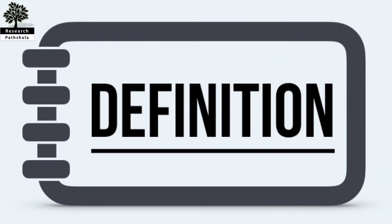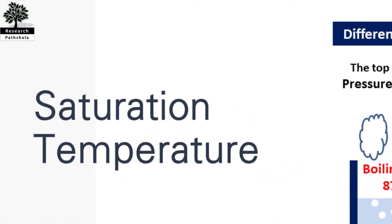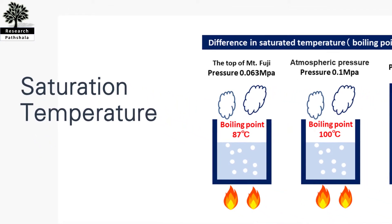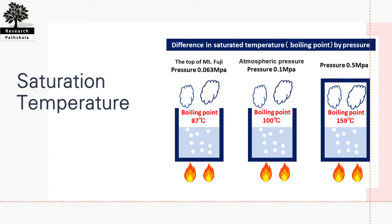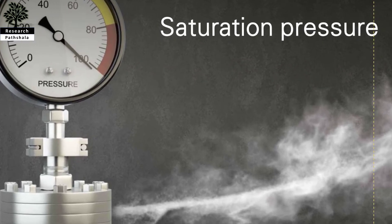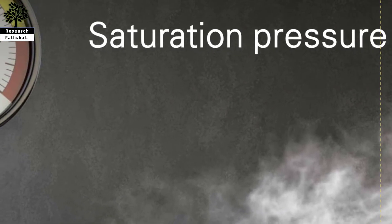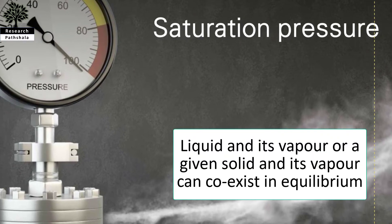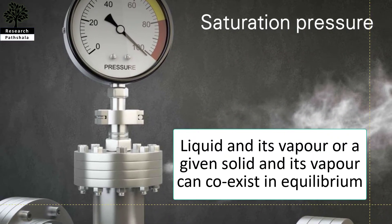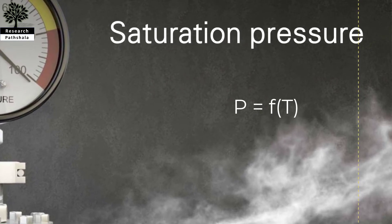Let us move towards the definitions. First, saturation temperature — simply called the boiling point. The saturation temperature is the temperature at a corresponding saturation pressure at which a liquid boils into its vapour phase. A liquid at saturation temperature will boil into its vapour phase as additional thermal energy is applied. Next, saturation pressure — at a given temperature, saturation pressure is the pressure at which a given liquid and its vapour, or a given solid and its vapour, can co-exist in equilibrium. For a pure substance, the saturation pressure is only a function of its temperature.